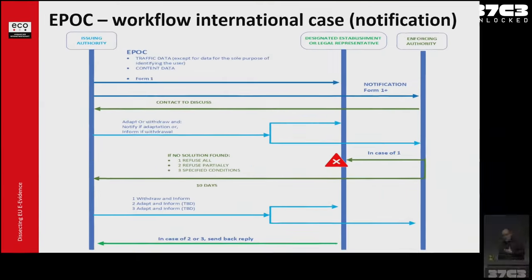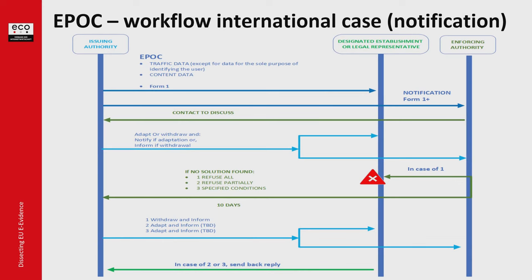If there is a refusal, the enforcing authority will first contact the issuing authority and discuss the grounds for refusal. Then they'll either amend the order to make it processable, or if they don't amend it, the enforcing authority tells the provider to refuse and no data is sent. It's almost impossible to resolve the timing in there, but that's the task the implementation group is currently considering.